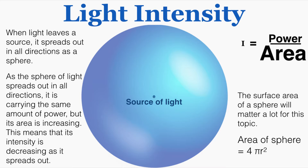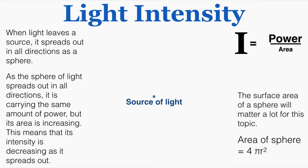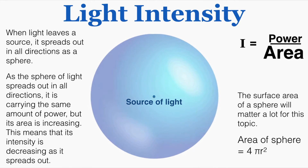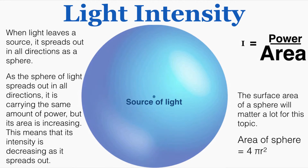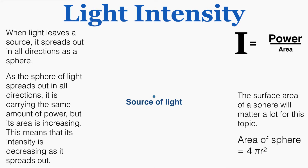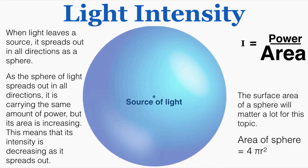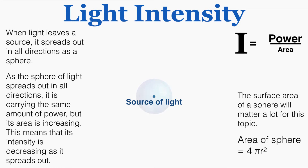This means that intensity decreases as the light spreads out. The intensity starts off very large because the surface area the light impacts is very small, but as the sphere grows, there's more surface area while the power remains the same, so intensity shrinks. The surface area of a sphere — 4π times the radius squared — is key for calculating the exact value of intensity.